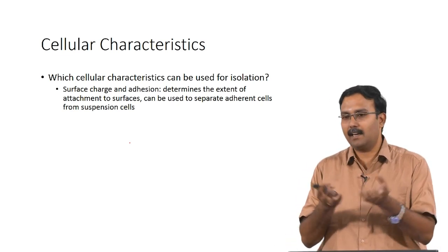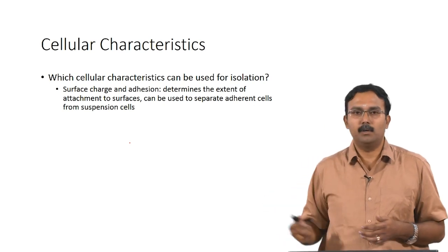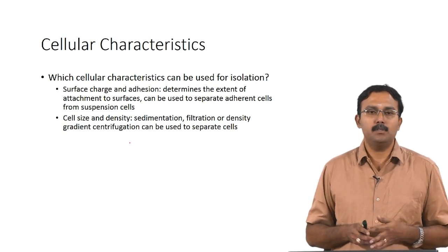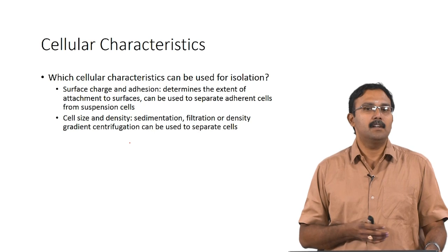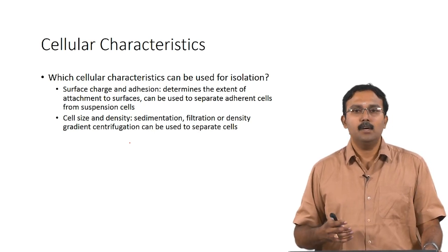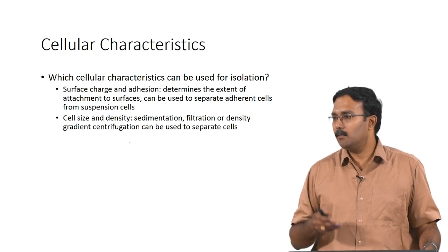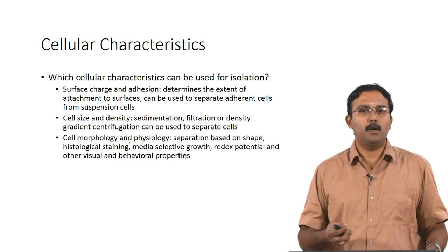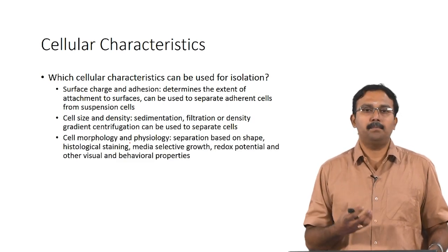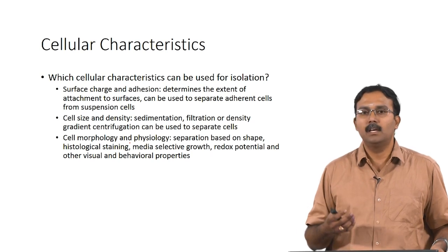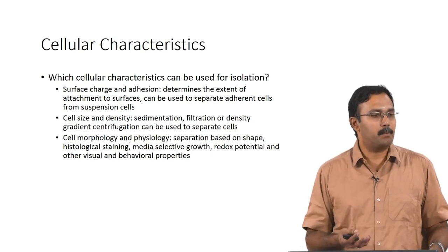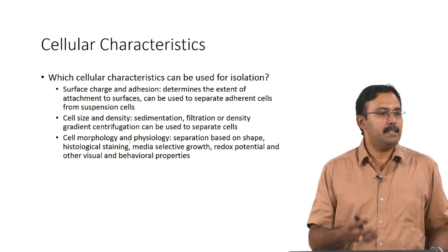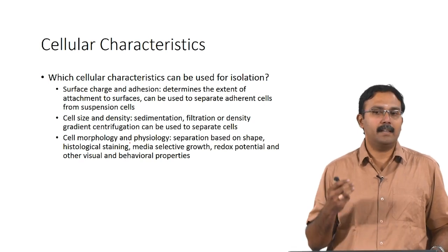Cell size and density are parameters which can be used for separation — sedimentation, filtration, or density gradient centrifugation are techniques which can be used. Cell morphology and physiology — including shape, histological staining, selective growth media, redox potential, and other visual and behavioral properties — can be used for identifying and isolating cells.